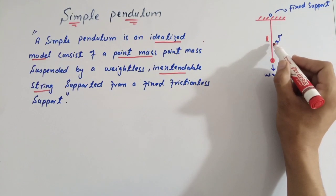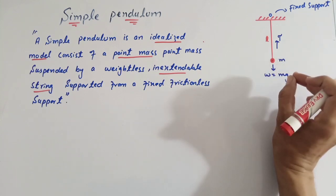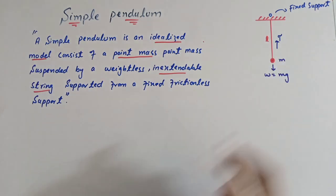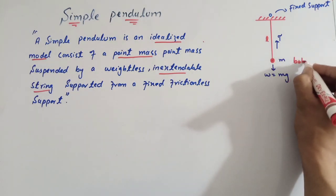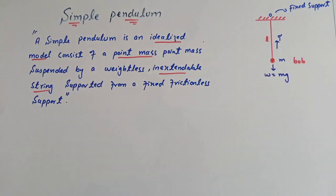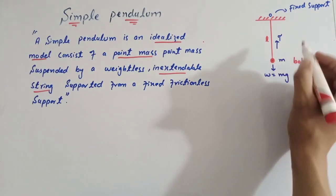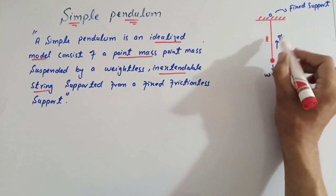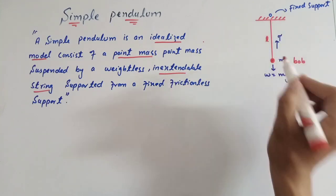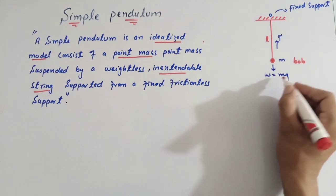یہاں پر l length of the string ہے جو کہ inextensible string ہے۔ یہ m ایک small mass ہے — point mass — اس کو ہم bob کہتے ہیں simple pendulum کی case میں۔ Bob ایک point mass کی طرح ہے، جسے ہم نے اس wire کے ذریعے اس fixed support سے عویزہ کیا ہے۔